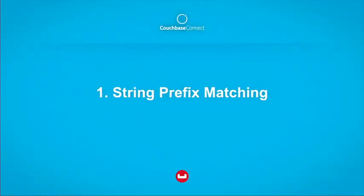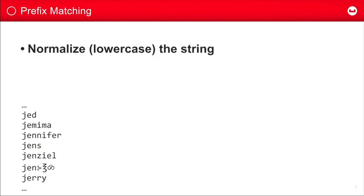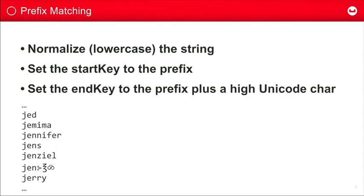Let's talk about queries first, starting with prefix matching. This came up in the development of the conference app — a question I got asked last week where they wanted to be able to do typing to filter the list of contacts. We have a hypothetical list of names and want to match all names that start with a particular prefix. First, normalize the string by lowercasing and probably removing diacritical marks. The start key in your query — where you start retrieving rows from — is going to be equal to the prefix. So if we want names starting with 'jen', the string 'jen' will be our start key.